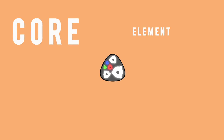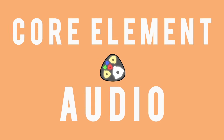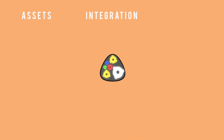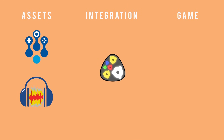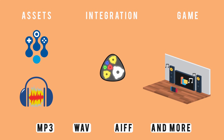Another core element of game development is the addition of sounds and music to gameplay in an effort to invoke emotion and feeling. Similar to graphics, audio assets are often created in separate applications like Wwise or Audacity. The engine then provides a framework for easy integration of audio assets into the build, with support of the commonly used file formats.